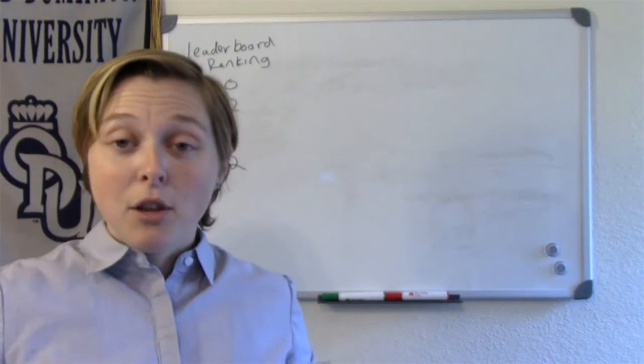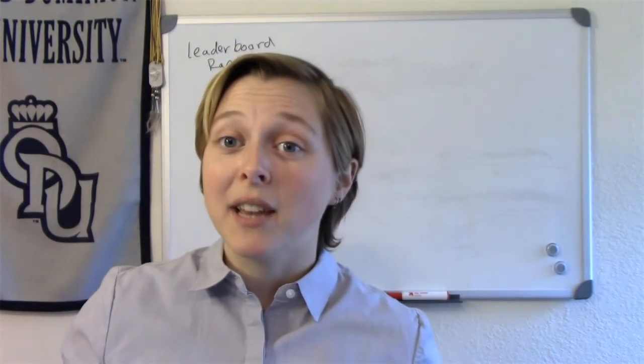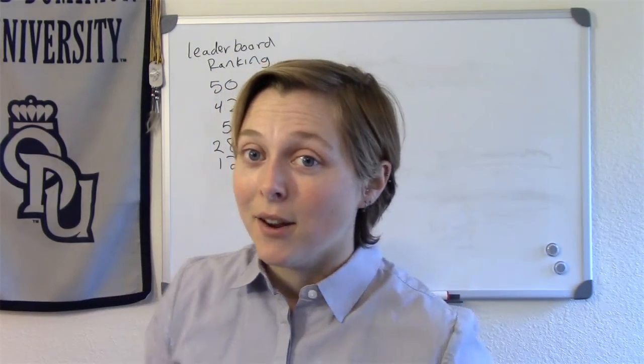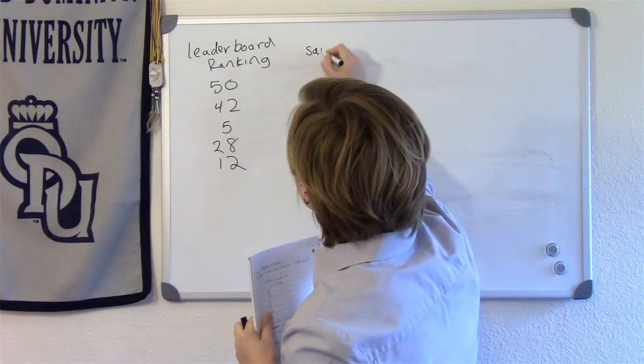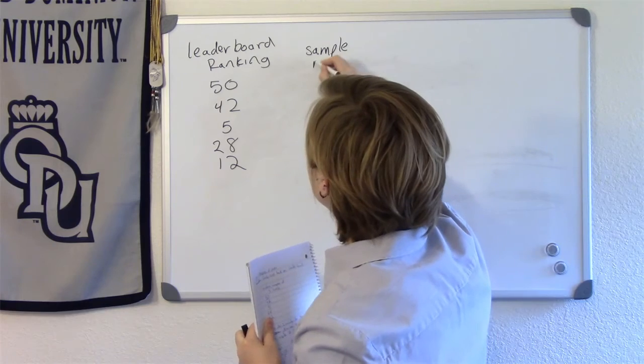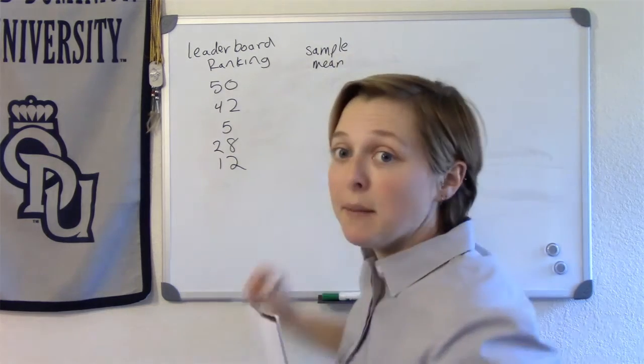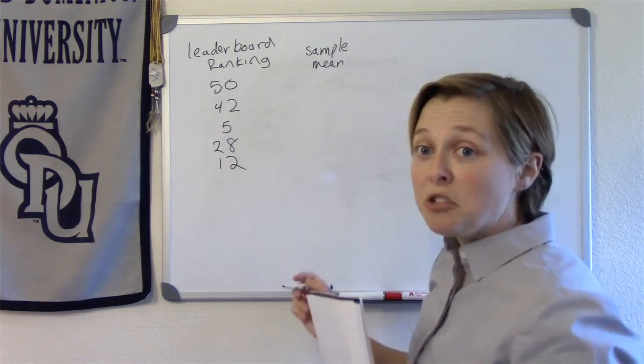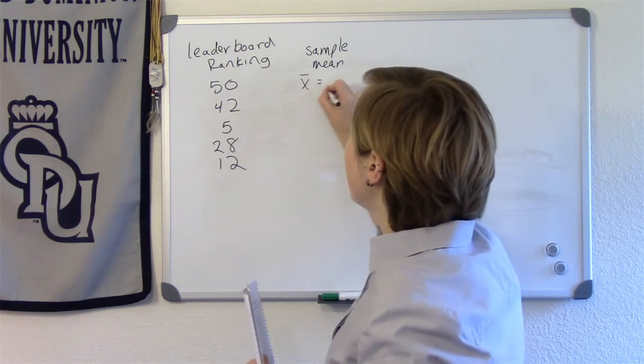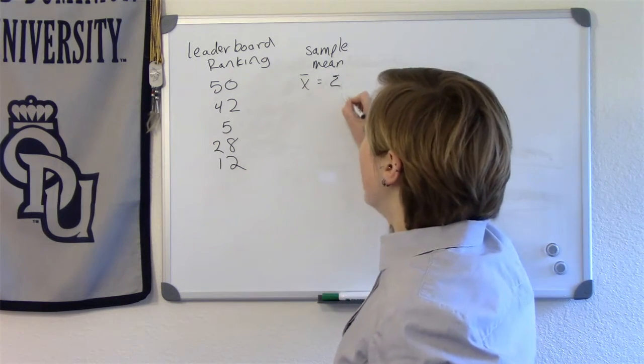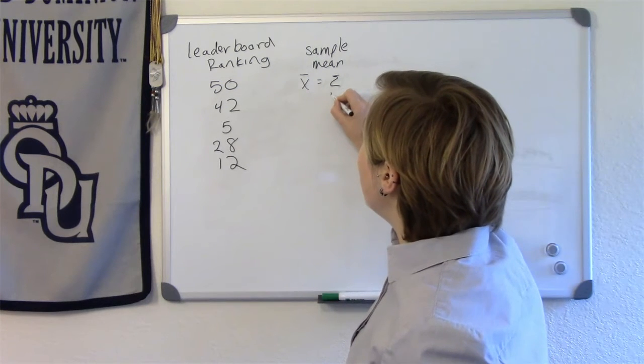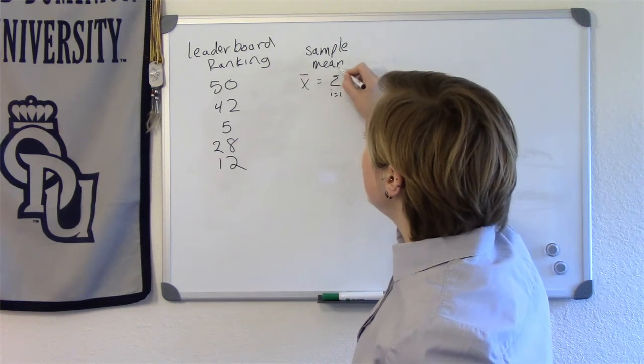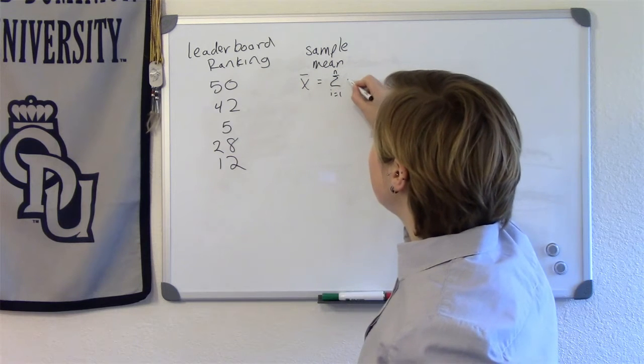So what should we calculate about this data to describe how I perform in Candy Crush? One thing that you might consider is maybe I should calculate the mean, or the sample mean. Let me write this down, leaderboard rankings were 50, 42, 5, 28, and 12.